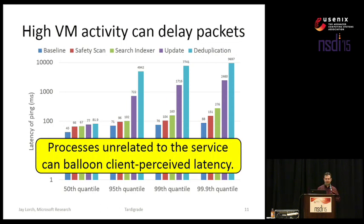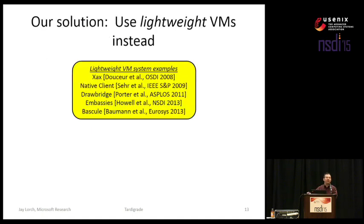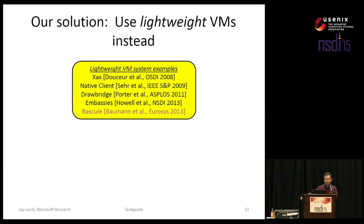We want to eliminate this problem. Our solution is what we call lightweight virtual machine replication. I need to introduce the term lightweight virtual machine — it's a catch-all term for a variety of technologies that have been coming out recently, such as Pico Processes, Zacks, Google's Native Client, Drawbridge, Embassies, and Bascule, which came out recently and is the LVM that we are going to use.